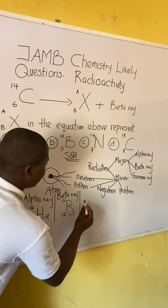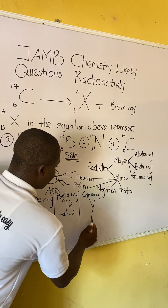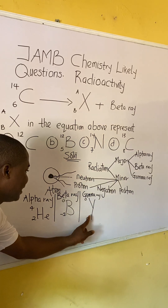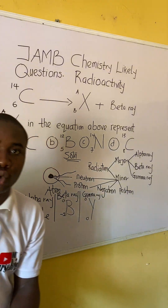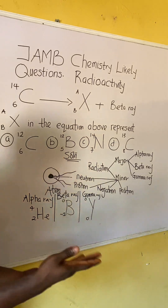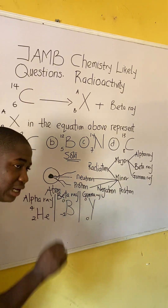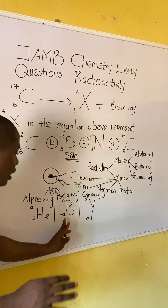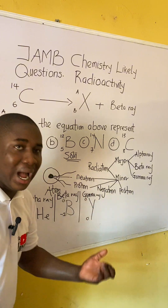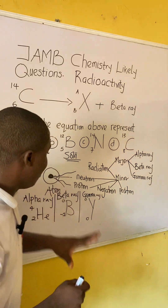Moving over to gamma ray, the symbol for gamma radiation is written with 0 on top and 0 on the bottom. To know the charges of these radiations, we look at the numbers at the bottom. For alpha, the bottom number is 2, meaning it is positively charged — plus two. For beta, the bottom number is minus 1, so beta is negatively charged. For gamma, it is zero, meaning gamma ray is neutral — it does not have a charge.